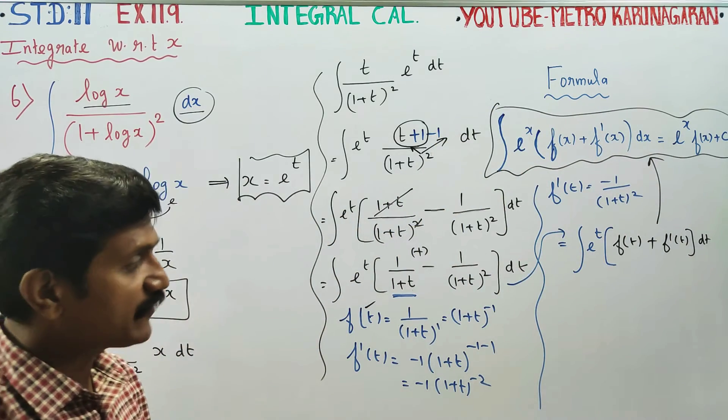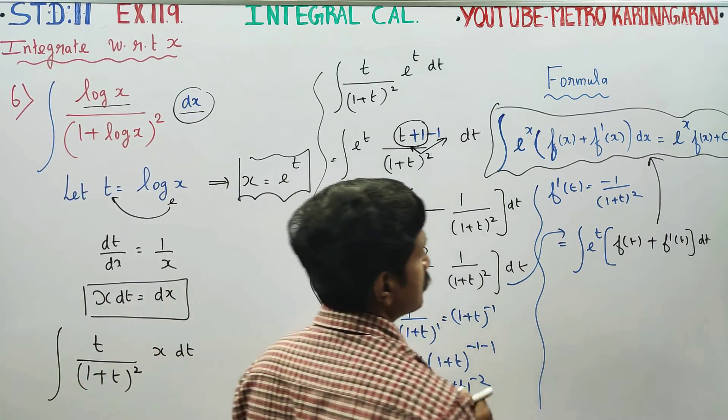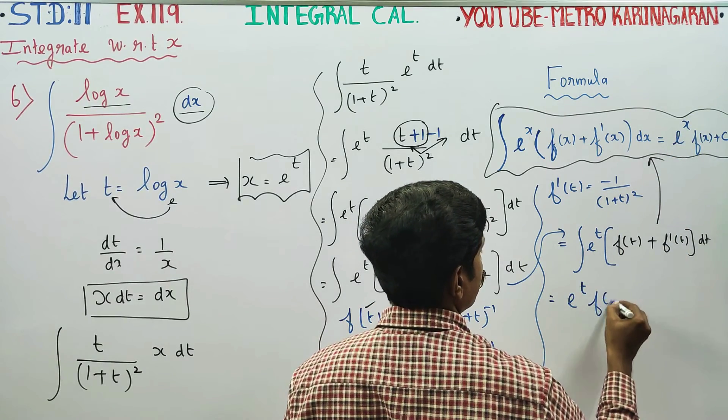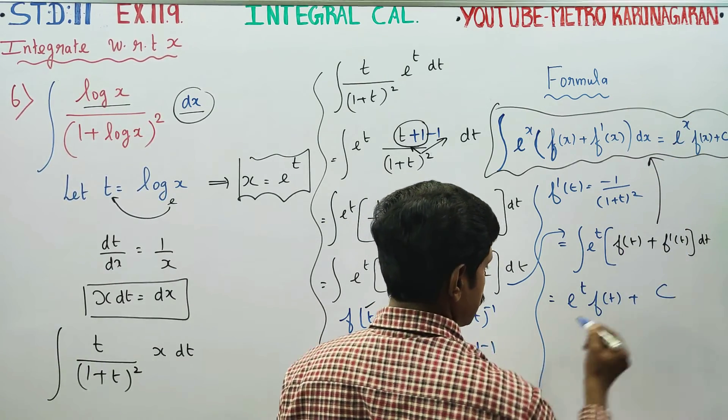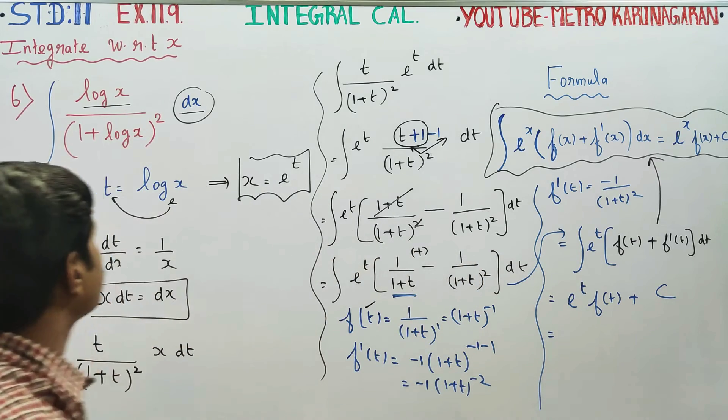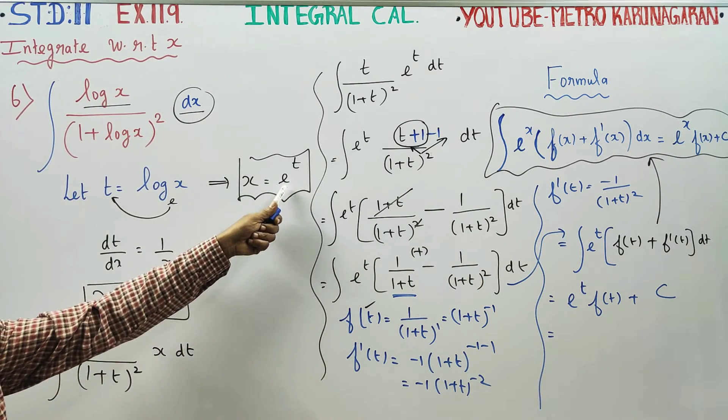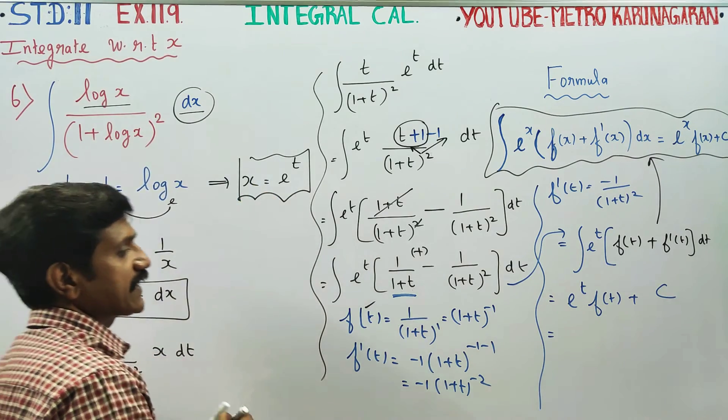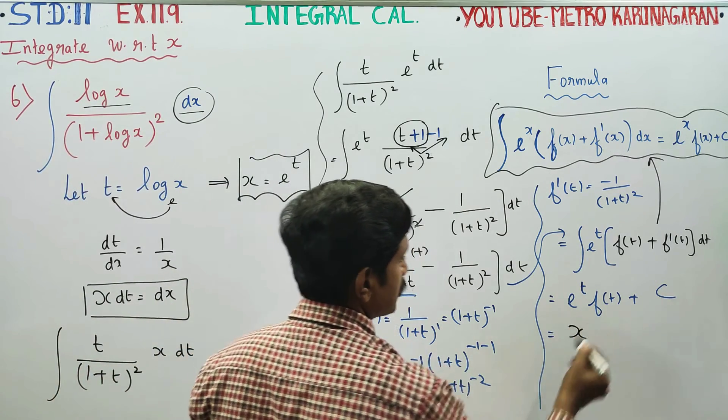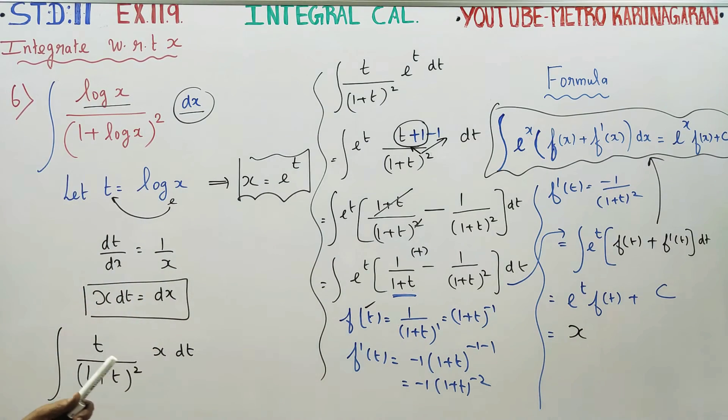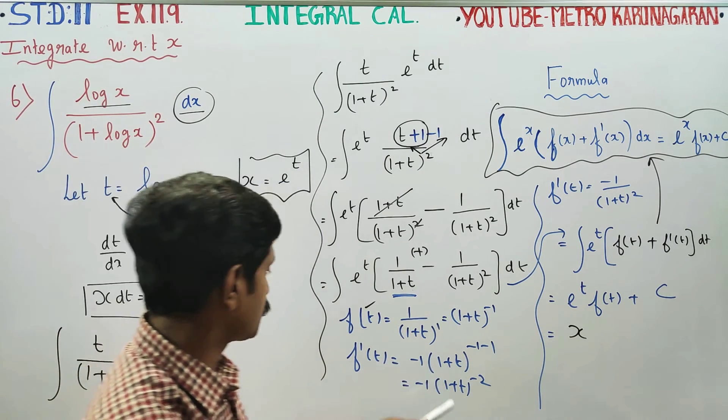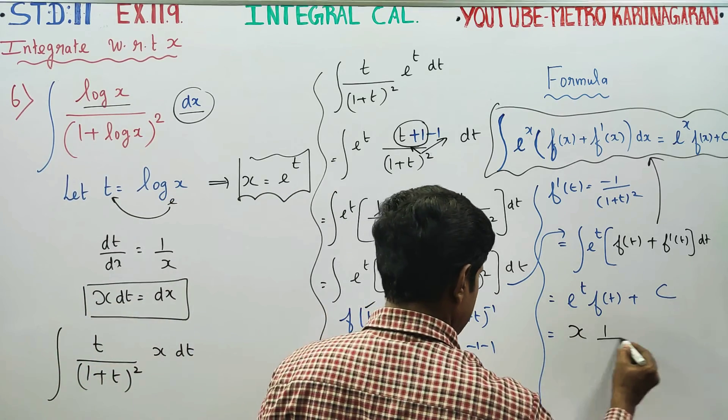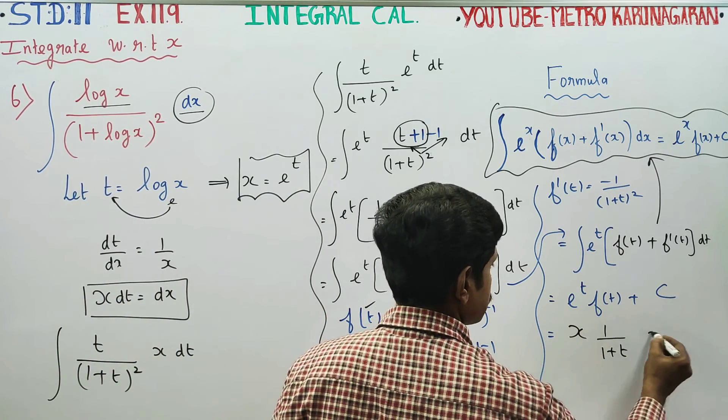What is your final answer? Your final answer will be e power t, f of t plus c. What is my e power t? The substitution will be x. What is f of t? f of t is 1 by 1 plus t plus c.